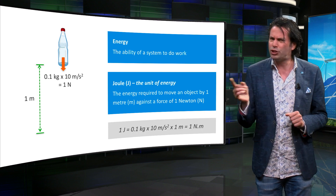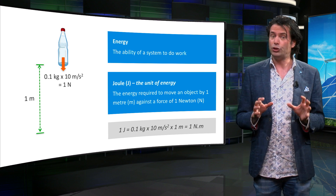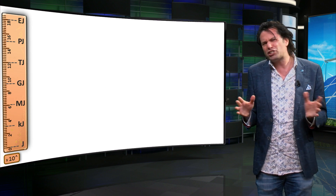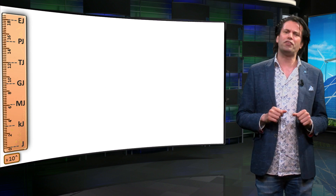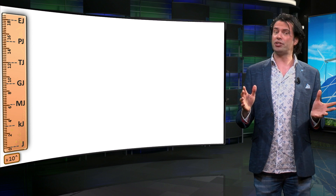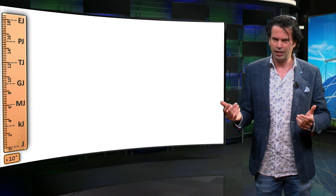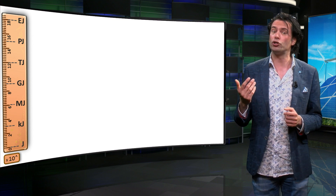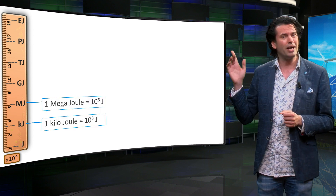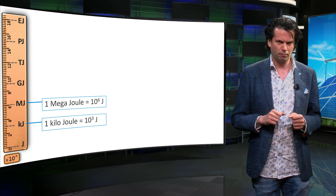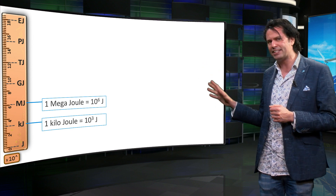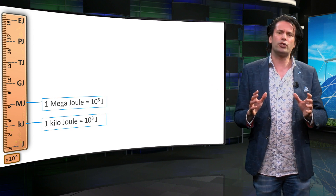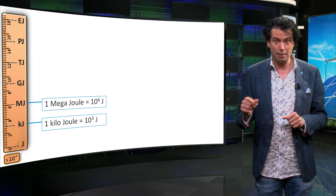Mathematically, 1 joule is equal to 1 newton meter of energy. 1 joule is defined as the amount of energy required to move an object by a distance of 1 meter against a force of 1 newton. One joule of energy is too small to quantify the energy that we encounter in our daily lives. In energy analysis, you would normally encounter higher orders of magnitude, such as the kilojoule and the megajoule. The scale on the left-hand side of the screen shows the joule in increasing orders of magnitude with steps of thousands.